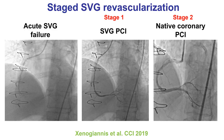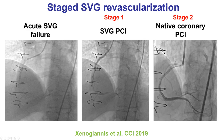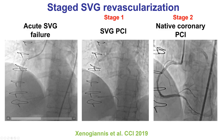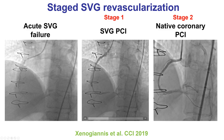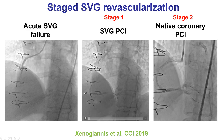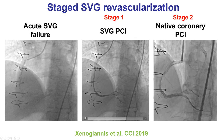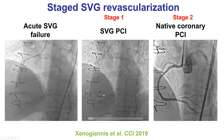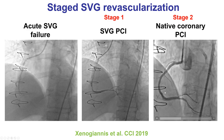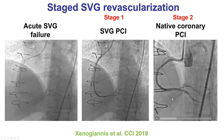There are some patients in whom staged revascularization is the best approach. This is an example of a patient who presented with acute myocardial infarction due to occlusion of a saphenous vein graft. As a first stage, the vein graft was recanalized. However, there was a balloon-undilatable lesion. The patient was discharged home and came back a few weeks later, at which time PCI of the native coronary artery CTO was performed successfully, providing good long-term outcomes.